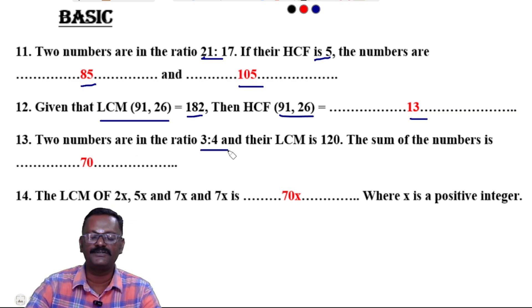Question 13: Two numbers are in the ratio 3:4 and their LCM is 120. The sum of the numbers is 70.